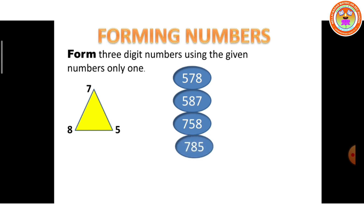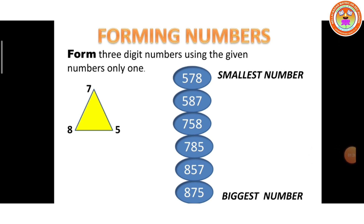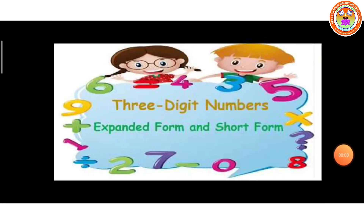5, 7, 8 is the smallest number. 8, 7, 5 is the biggest number. Thank you students. Now let's look at 3-digit numbers — expanded form and short form.